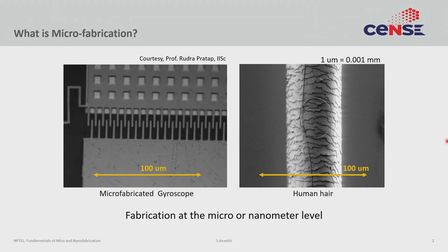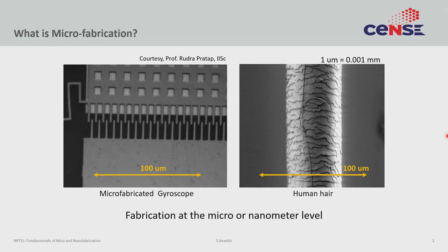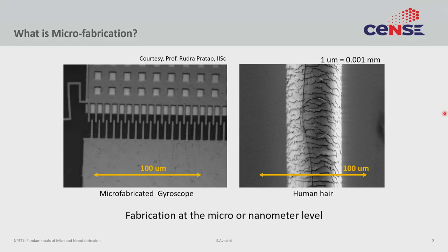Microfabrication is trying to make things at a very small scale, typically micron scale, or sometimes even in the nanoscale. Here is an example of a gyroscope fabricated at IIC, Bangalore. This is Professor Rudra Pratap. What you are seeing is a moving mass, and that moving mass is what provides the gyroscopic functionality. The details of the device are not important. What is important is to look at the scale bar — a hundred micron scale bar. The features on the left-hand side are actually much smaller, something on the order of one to ten microns.